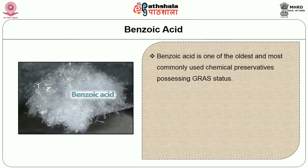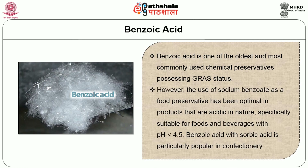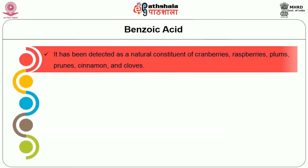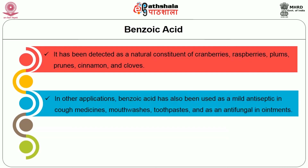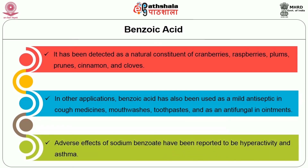Next, let us see about benzoic acid. Benzoic acid is one of the oldest and most commonly used chemical preservatives possessing GRAS status. However, the use of sodium benzoate as a food preservative has been optimal in products that are acidic in nature, specifically suitable for foods and beverages with pH less than 4.5. Benzoic acid with sorbic acid is particularly popular in confectionery. It has been detected as a natural constituent of cranberries, raspberries, plums, prunes, cinnamon and cloves. Benzoic acid has also been used as a mild antiseptic in cough medicines, mouthwashes, toothpaste and as an antifungal in ointments. Adverse effects of sodium benzoate have been reported to be hyperactivity and asthma. The chemical formula of benzoic acid is C7H6O2.